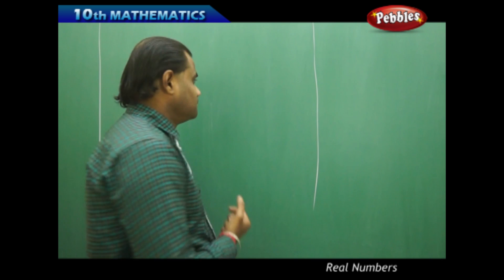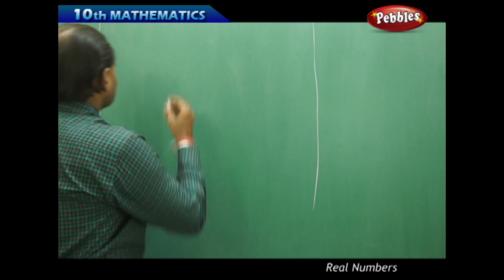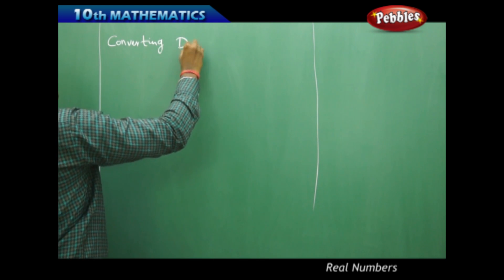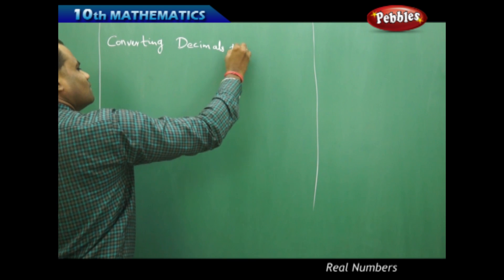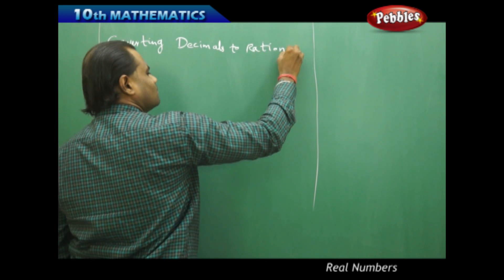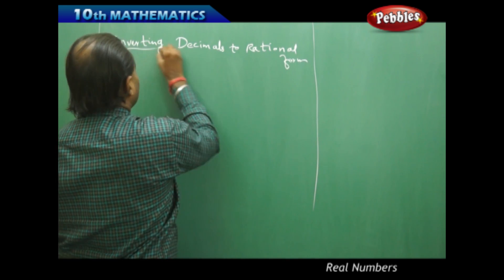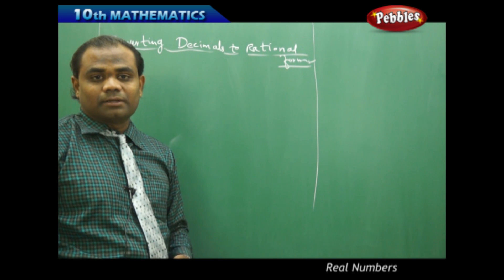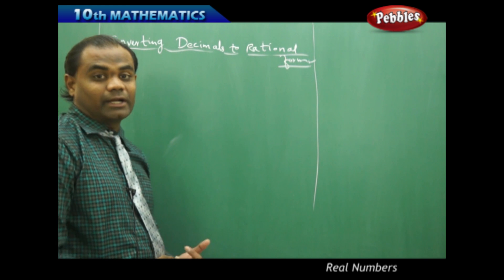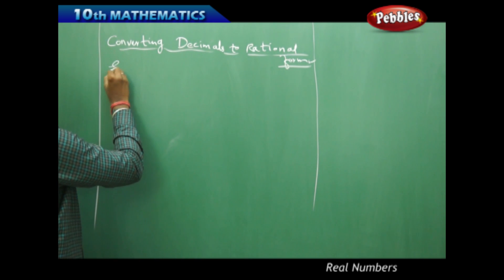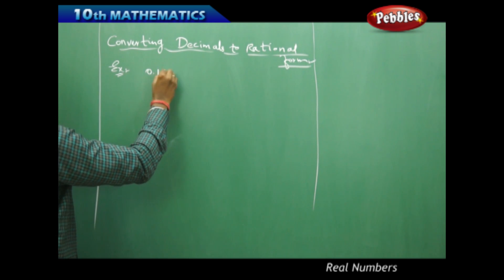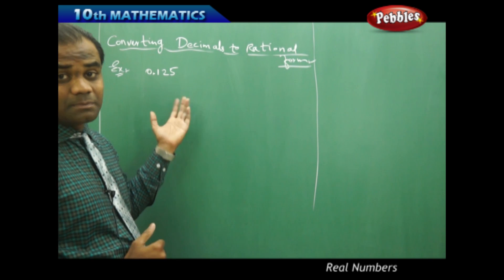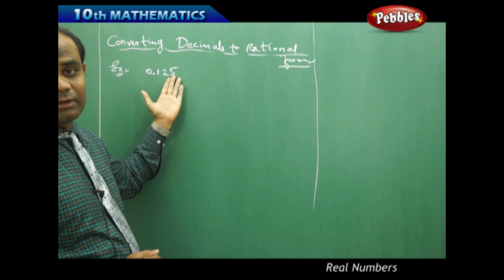So let's start with an example problem on converting decimals to rational form. Let's take an example and see how a decimal number can be converted to its respective rational number. For example, if I have 0.125 as the number, then this is clearly a decimal number with three values after the decimal.